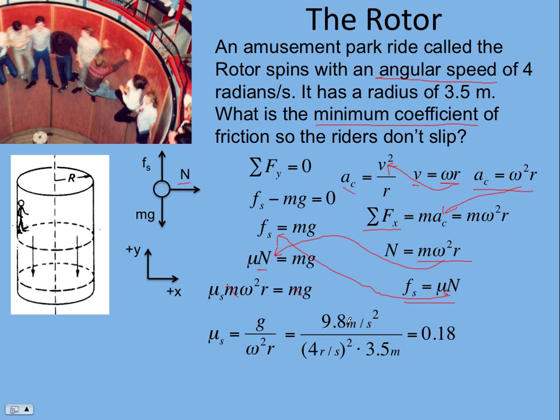We put in our numbers: 9.8 m/s² divided by 4² radians/s times 3.5 meters. Looking at the units, meters and seconds squared cancel, leaving no units. Radians are dimensionless, so the coefficient of friction is dimensionless. We got 0.18.